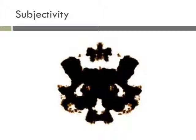An example is the Rorschach test, in which a person looks at an inkblot and tells the psychologist what image they see. There is no actual image in the inkblot. You see what your psyche predisposes you to see. Our senses are not perfect, and our feelings and expectations affect how we perceive things in every area of life.